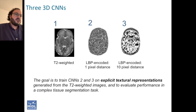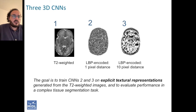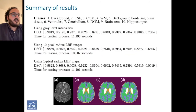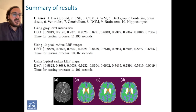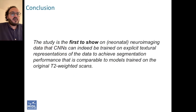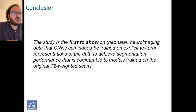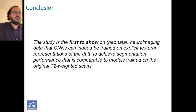Our results show that it's quite possible to achieve really good segmentation performance using networks that did not see the original T2 images — these networks only saw the textural representations of the images explicitly computed using the LBP algorithm — and they achieved performance comparable to the network trained on the T2. This is the first study we're aware of that shows that CNNs can indeed be trained on explicit textural representations of neonatal neuroimaging data in order to achieve segmentation performance comparable to models trained on the original T2-weighted scan.